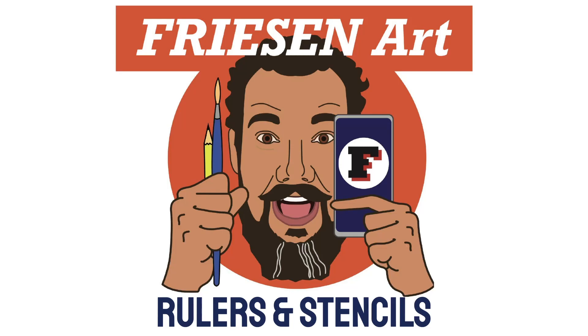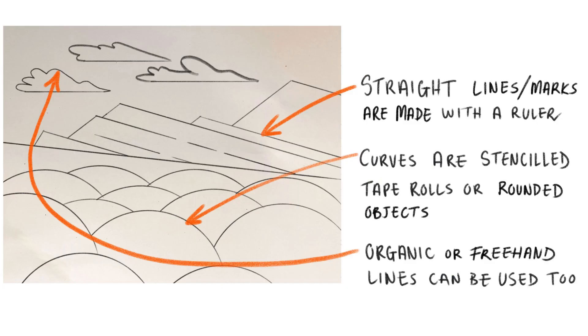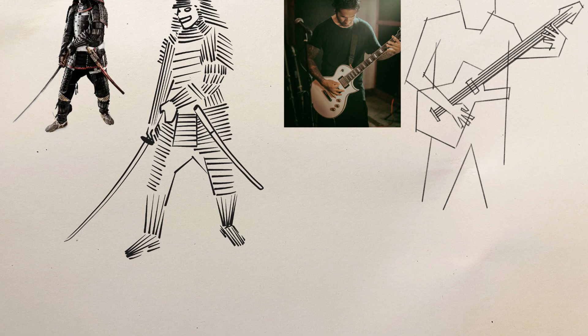Welcome to rulers and stencils. For this project you will be making a drawing or a painting using straight lines with a ruler or some type of curve, and that's going to be the basis for the work. It can be figurative like you see here, but it can also be a landscape, an object, or abstract. So the concept is fully up to you.